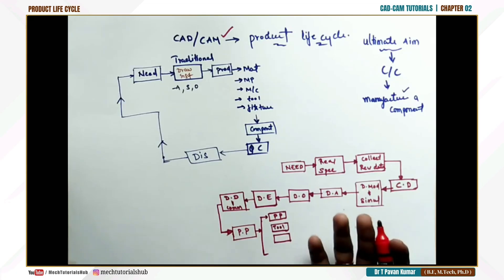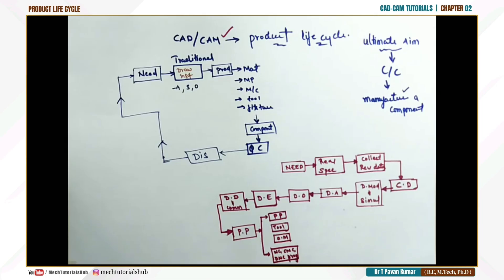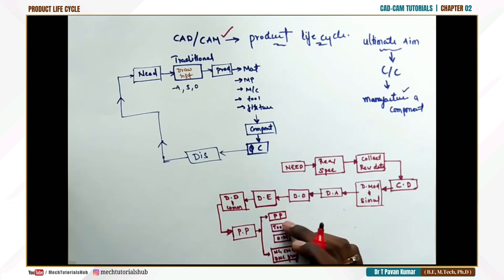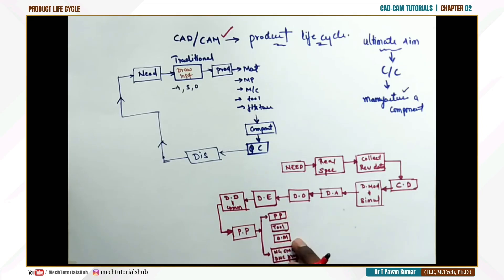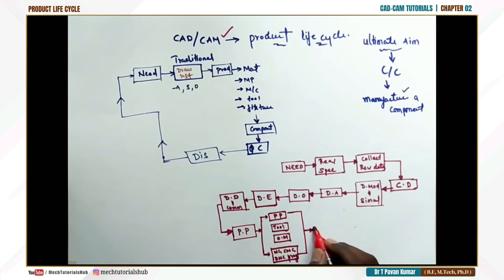After procuring tools, we order the required bulk of material. Then we plan for NC, CNC, or DNC machinery programming. If the process planner communicates with the design team, all these things — production planning, tools, material ordering — can be estimated and arranged. If NC, CNC, or other machines are not available with the company, they are procured.